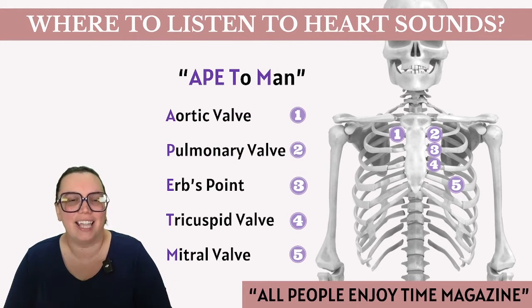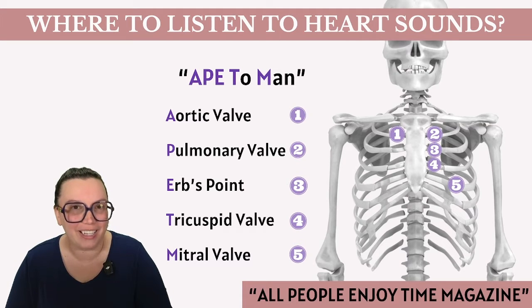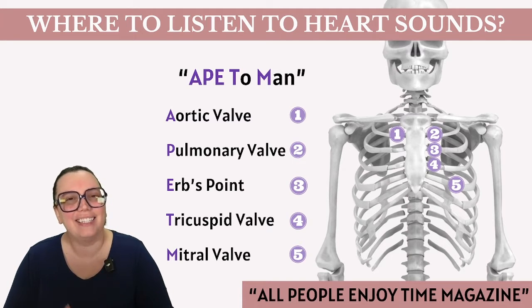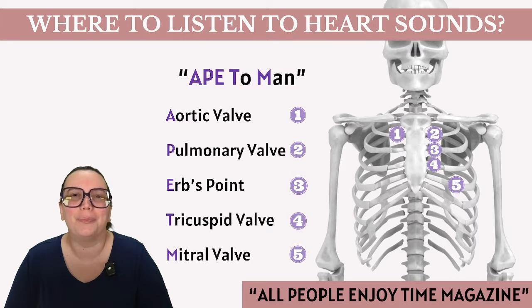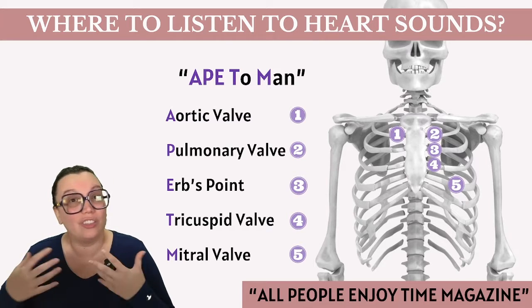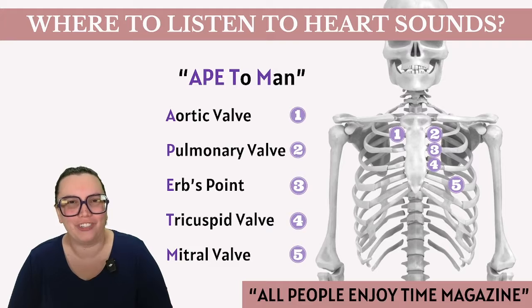The A stands for aortic, the P stands for pulmonic, the T stands for tricuspid, and the M stands for the mitral valve. Let's get started with our live demonstration of how we accomplish this.